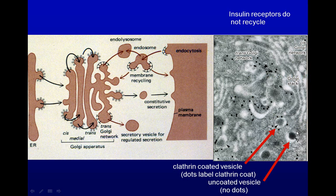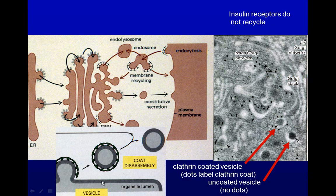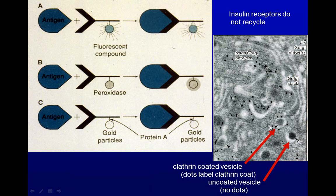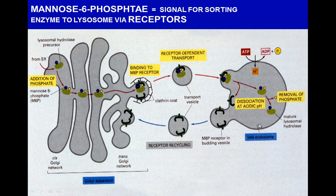Notably, insulin receptors do not recycle because it's important to continue regulating function. To visualize where clathrin is, we use antibodies against clathrin attached to immunogold particles. The antibody attaches to clathrin, so these gold particles show the clathrin coating the vesicle. When the clathrin is no longer around the vesicle — in uncoated vesicles — we no longer see the gold particles.